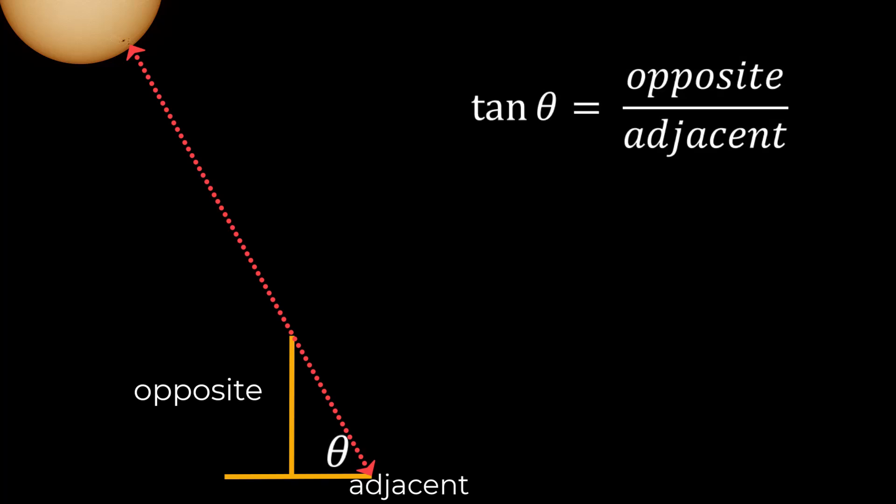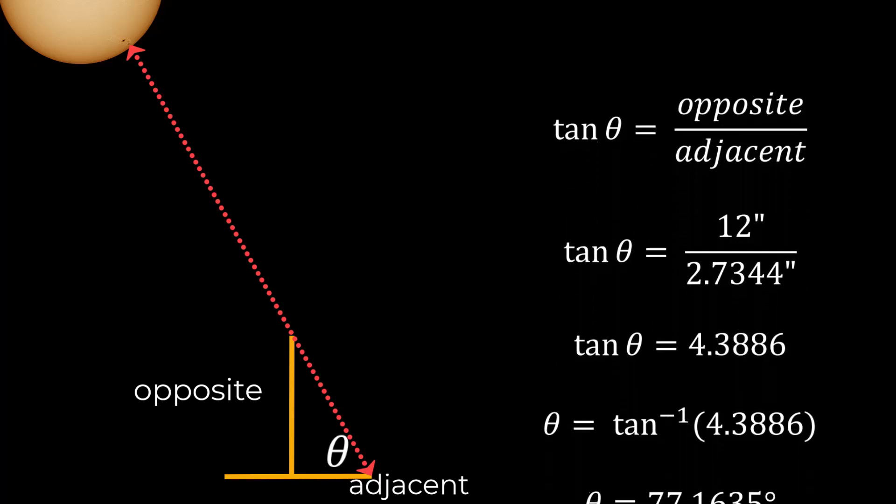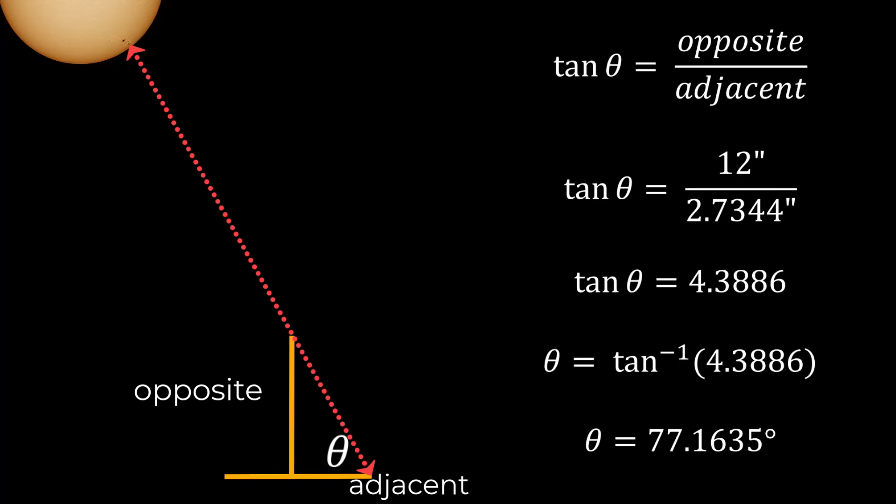So this is where we plug in our measurements the side opposite is the height of our carpenter's square which is 12 inches the adjacent leg is the length of the shadow which is 2.7344 inches. The reason you don't need to convert to metric is because this is a ratio inches divided by inches cancels so no conversion necessary and from here we simply do the math. I'm not going to talk you through it I'll just show it right here and you can see the math shows that the sun was 77.1635 degrees above the horizon at the exact moment of local noon where I live.